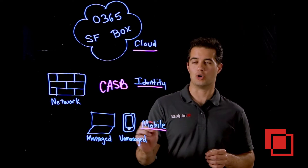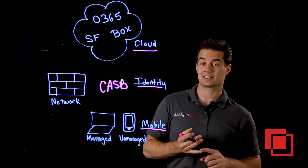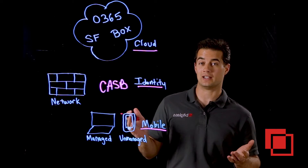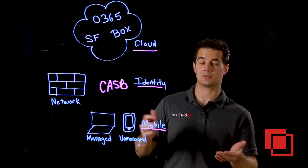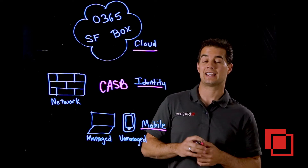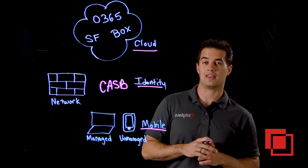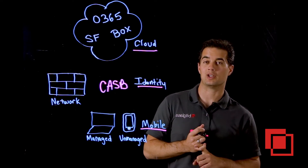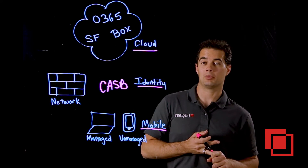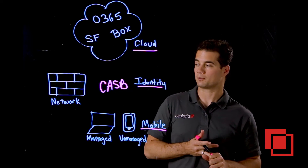The third piece is mobile. A CASB will allow you to control via access control and data leakage prevention what type of data is accessible on a managed device versus an unmanaged device. A CASB will also allow you to protect the data that's synced down to that device via things like encryption, rights management, agentless selective wipe, device pin code enforcement, and device level encryption.